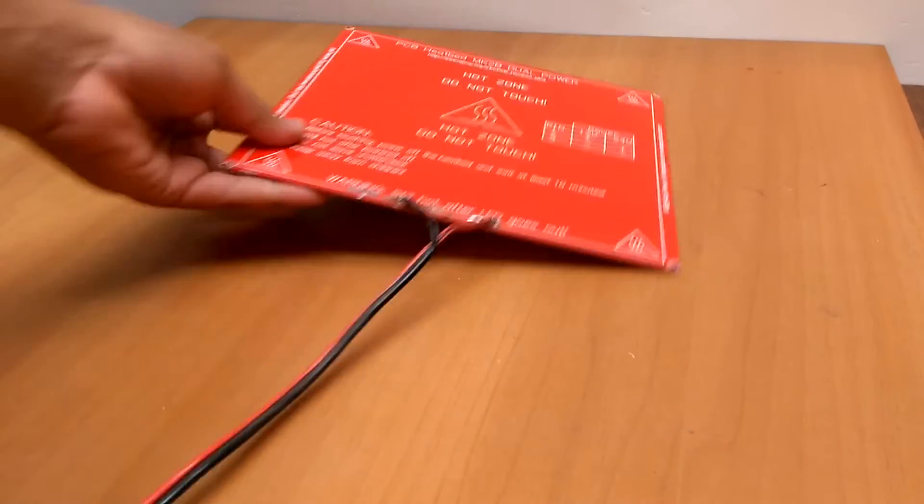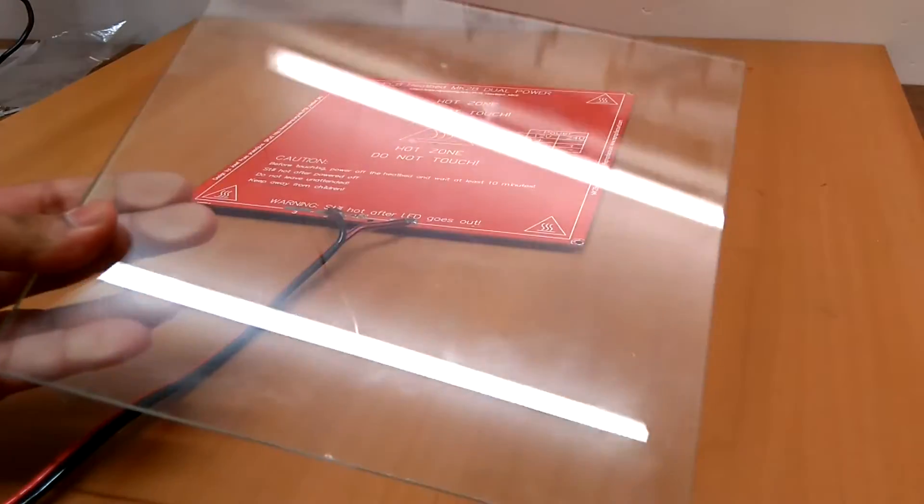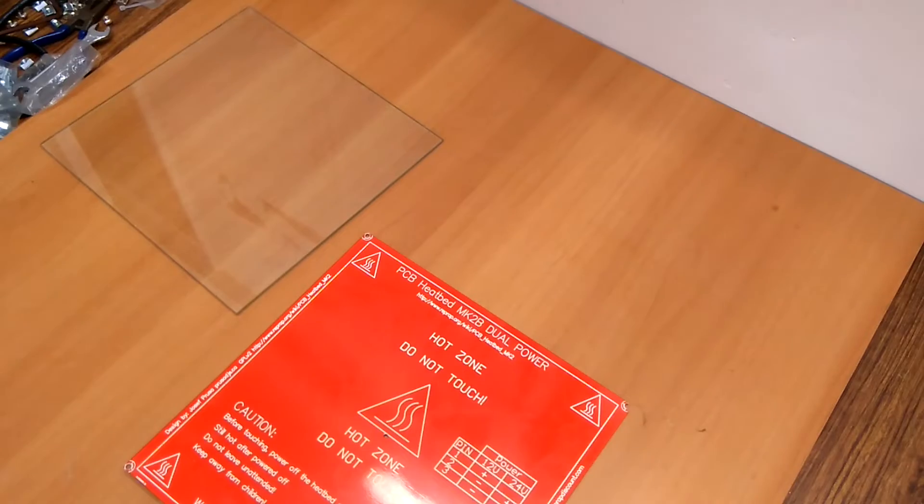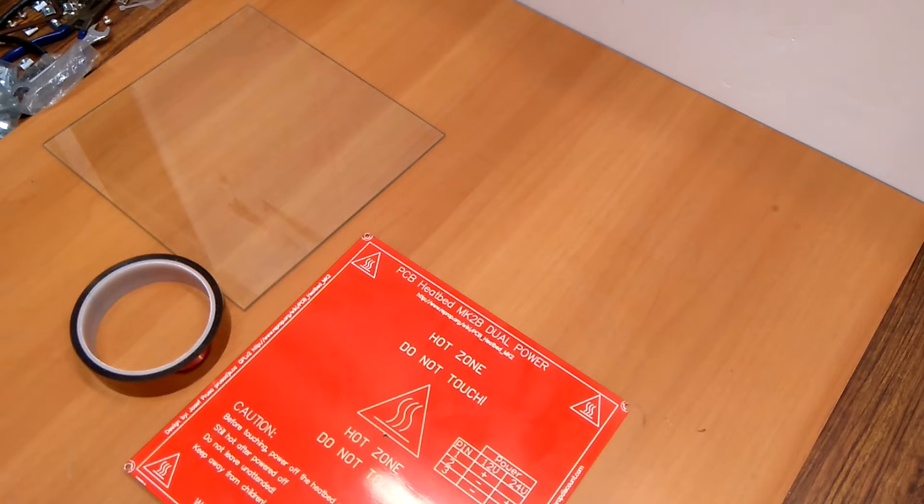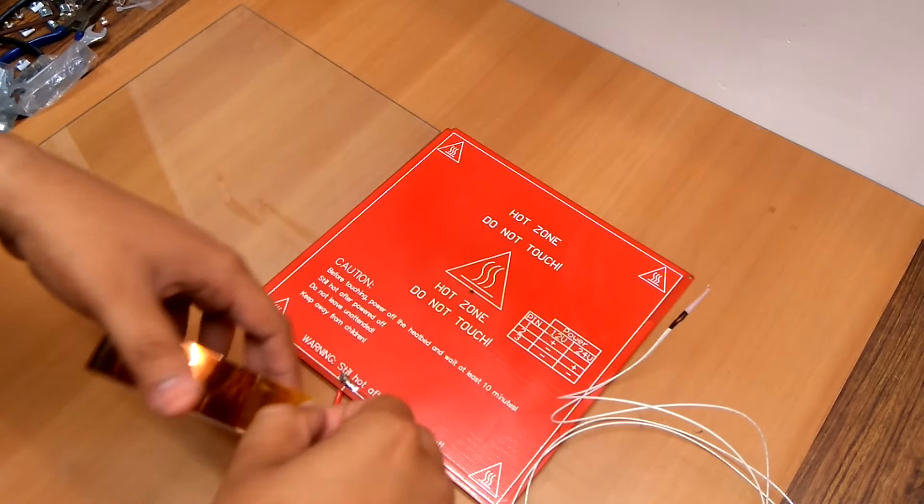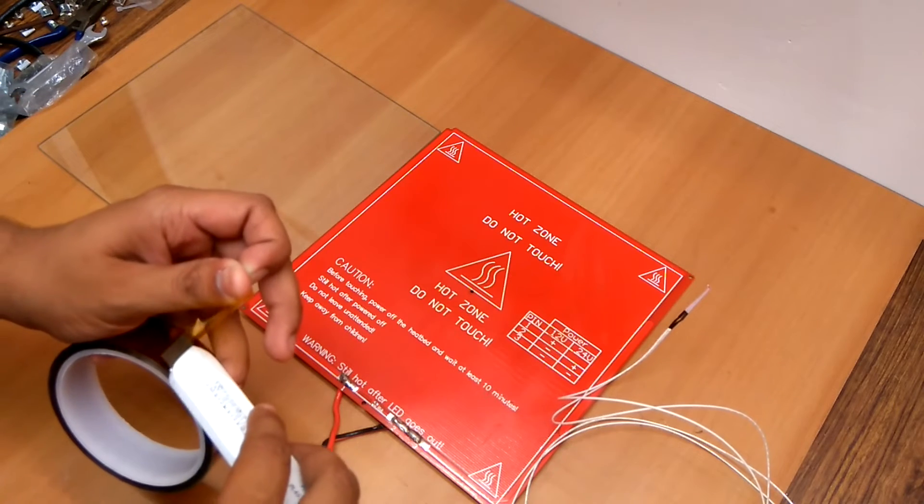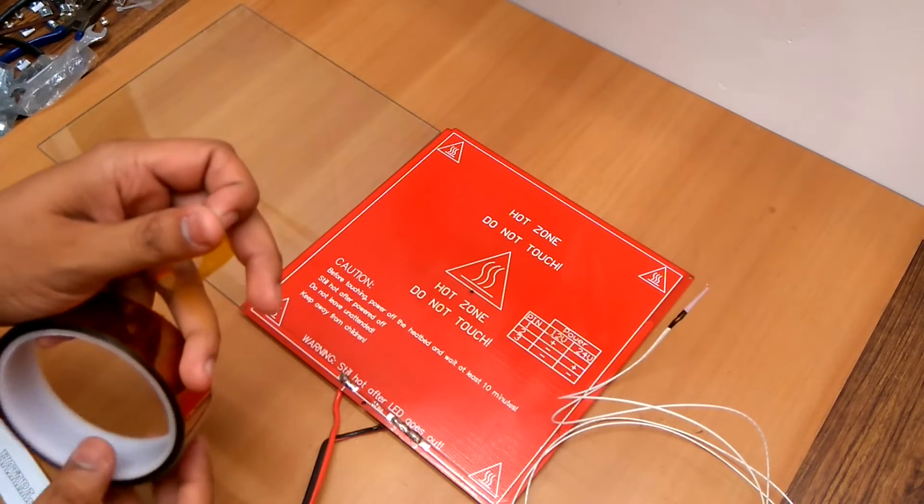It was time to fix the heated bed and glass plate on the Y carriage, but before that I attached the thermistor on the heated bed with heat-resistant Kapton tape.